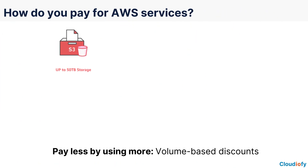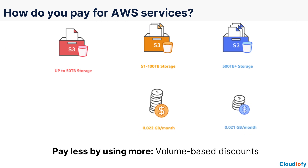Next, volume-based discounts mean the more you use, the less you pay. For example, if you are using AWS S3 to store your data, you can get lower pricing based on how frequently you access data and the performance you need. Amazon S3 storage classes offer the flexibility to manage your costs.